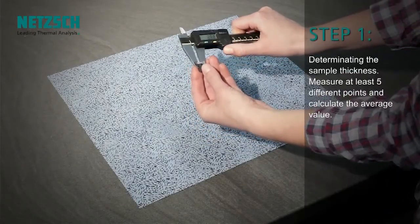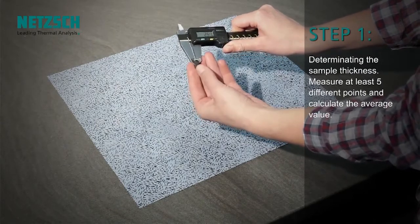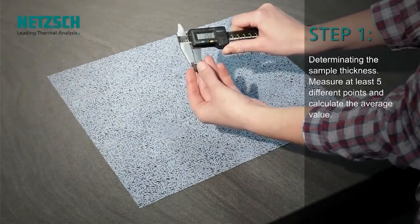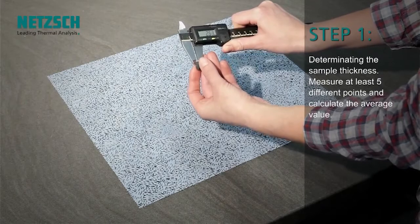First, the sample thickness must be determined. Measure at least five different points of the sample and calculate the average value.